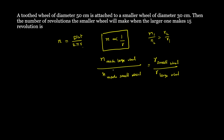From the problem: the large wheel has diameter 50 cm, so r1 = 25 cm; the smaller wheel has diameter 30 cm, so r2 = 15 cm. They are asking for n2 — the number of revolutions the smaller wheel makes — and we are given that n1 = 15 revolutions for the larger wheel.